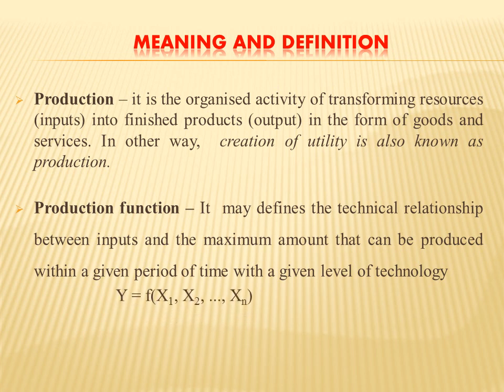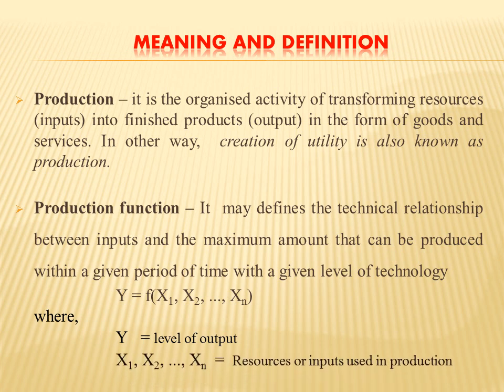Production function may be written as: y is a function of x1, x2, and xn, where y is the level of output and x1, x2, and xn are the resources or inputs used in the production process. Basically, production function solves the relationship between inputs and outputs.